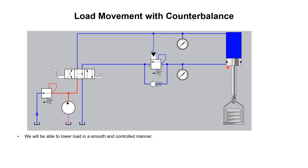When we are trying to raise the load, it will be a normal operation. We select the raise direction, the hydraulic pump supplies fluid, and through the free flow check valve, fluid will pass and start raising the load — this is normal operation.